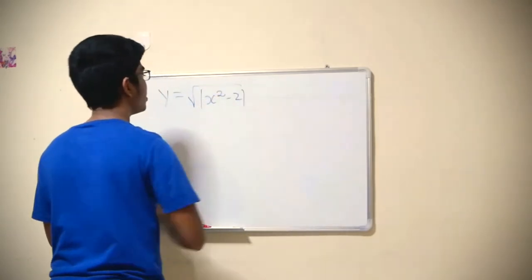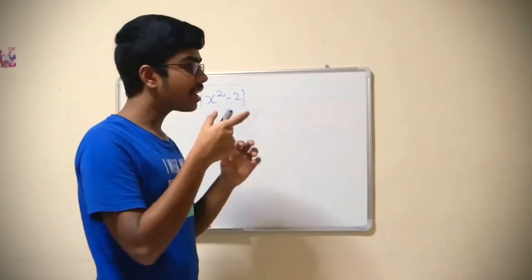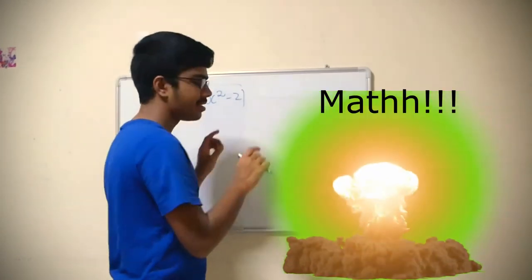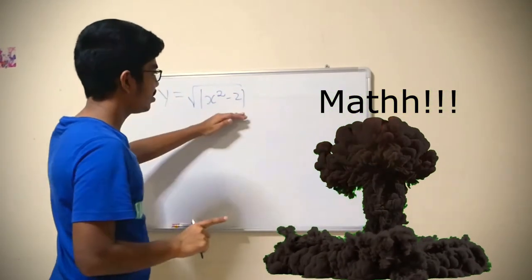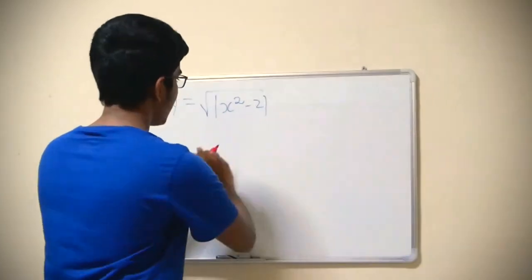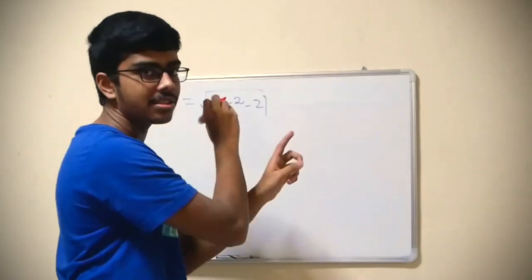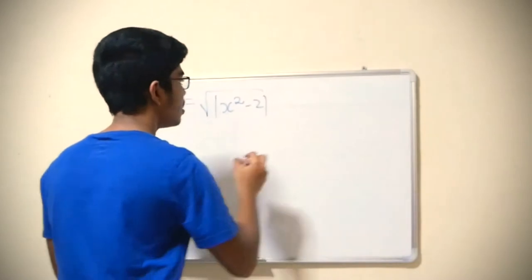Let's think of a tougher example: y equals square root of modulus of x squared minus 2. This is really kind of overwhelming, but just use the same step. What you need to do is apply this: make the part inside the modulus greater or equal to 0 and solve for that.